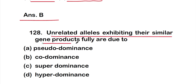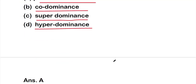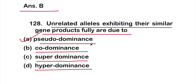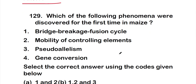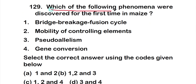Question 128: Unrelated alleles exhibiting their similar gene products fully are due to option A - pseudo dominance, option B - co-dominance, option C - super dominance, or option D - hyper dominance. The right answer is option A, pseudo dominance.